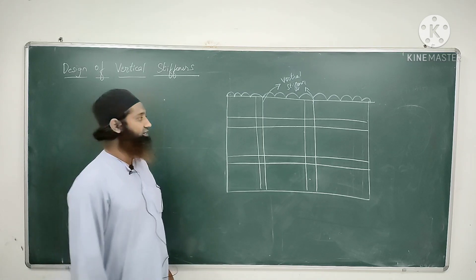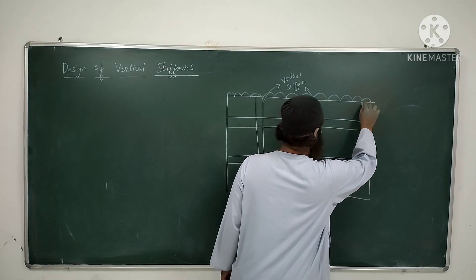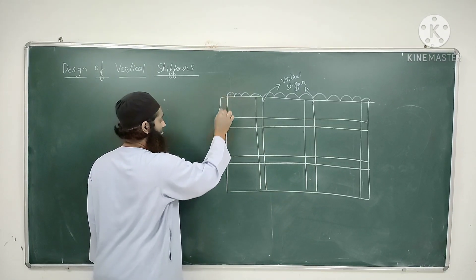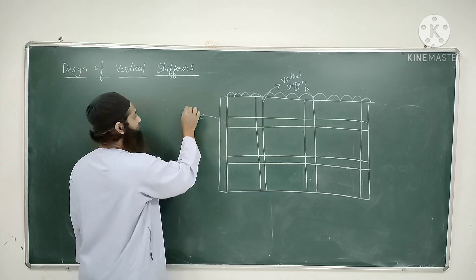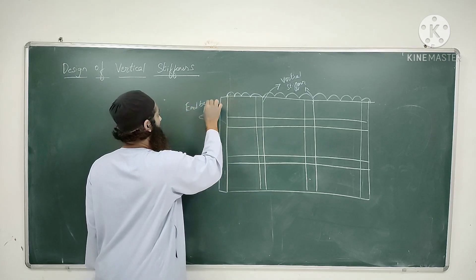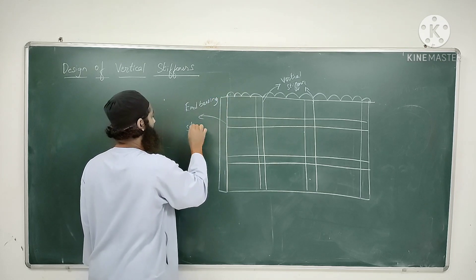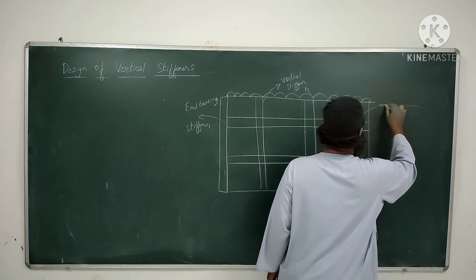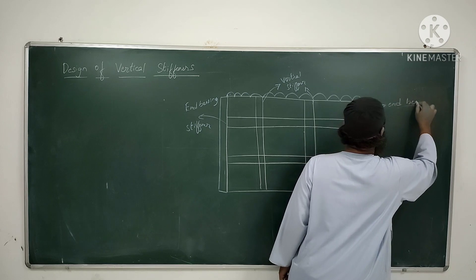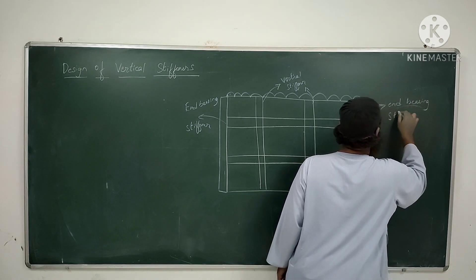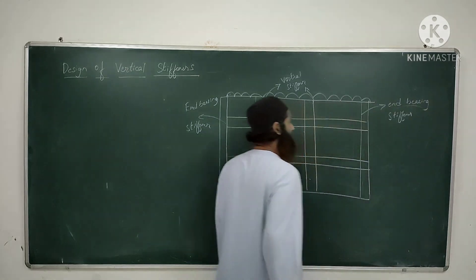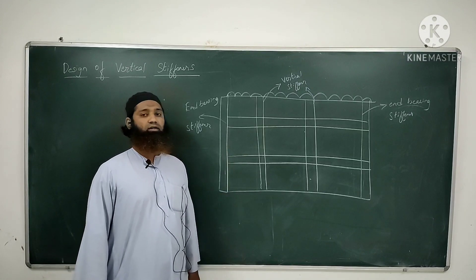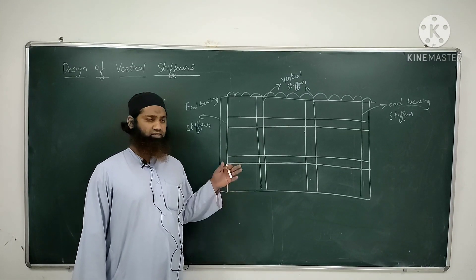If these vertical stiffeners are provided at the corners — either on this side or on that side — this is known as end bearing stiffener. These vertical stiffeners are provided to resist buckling and give buckling strength to the plate girder.